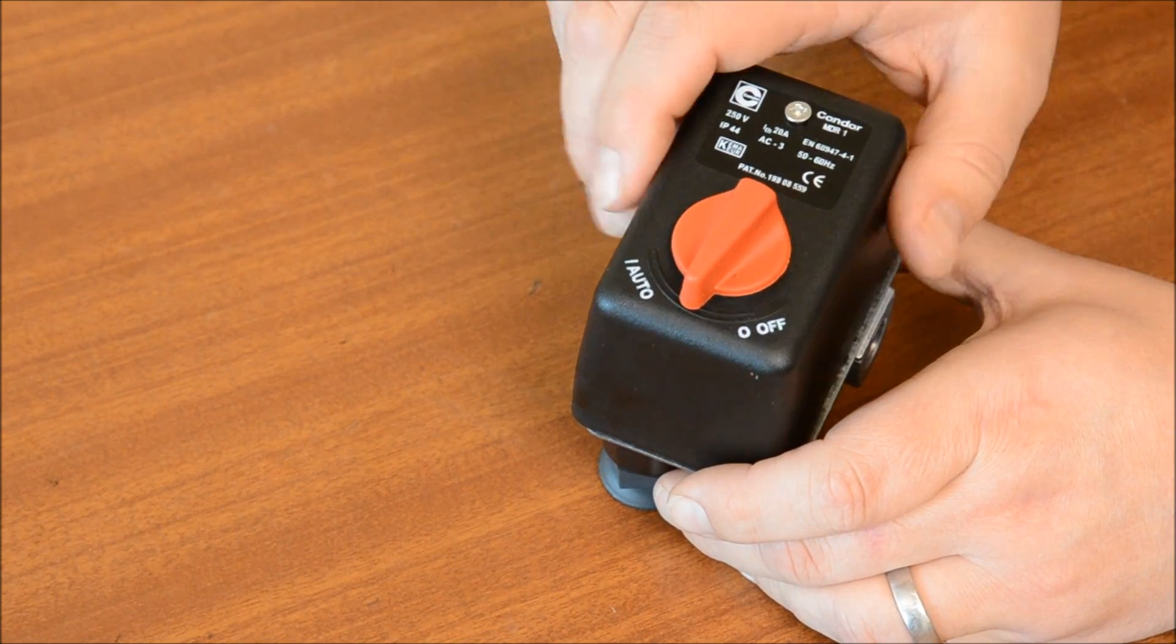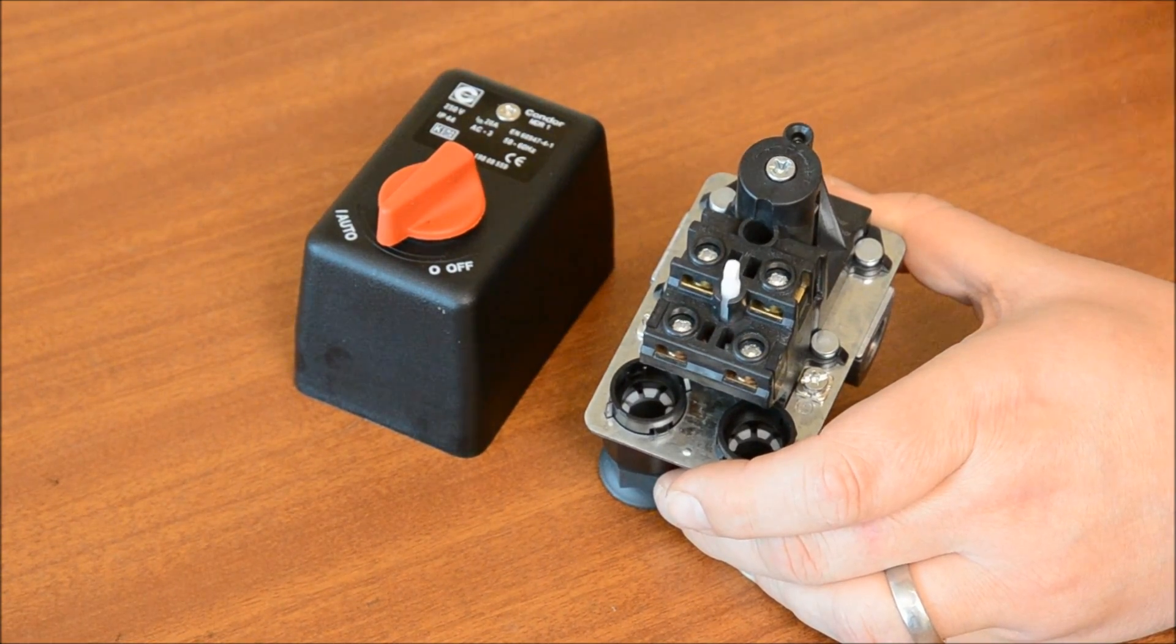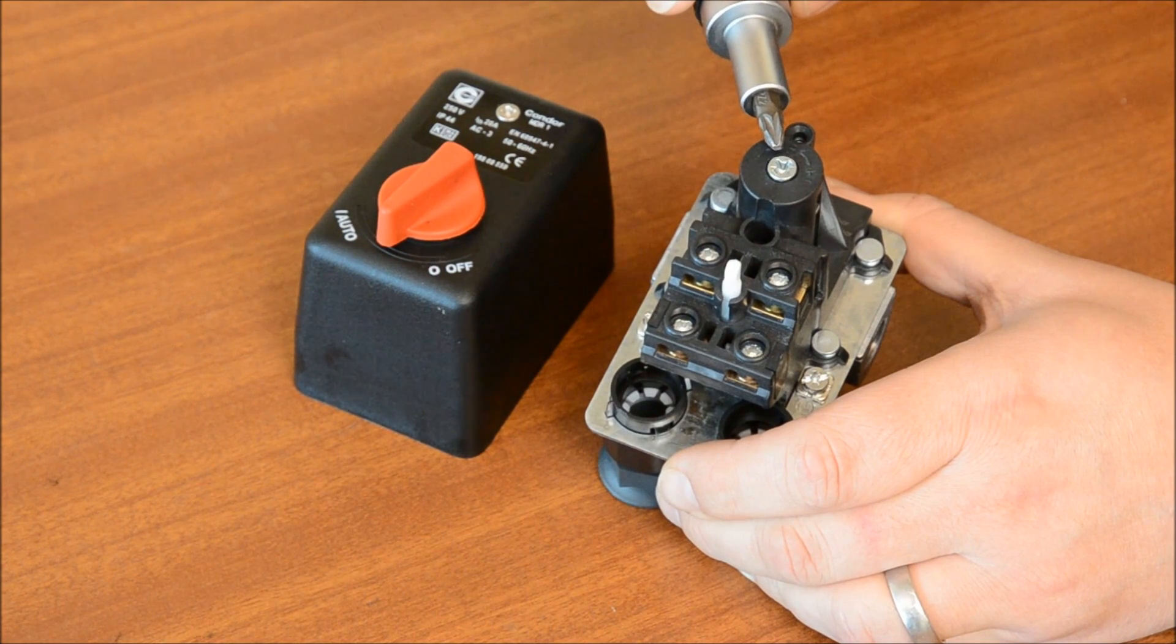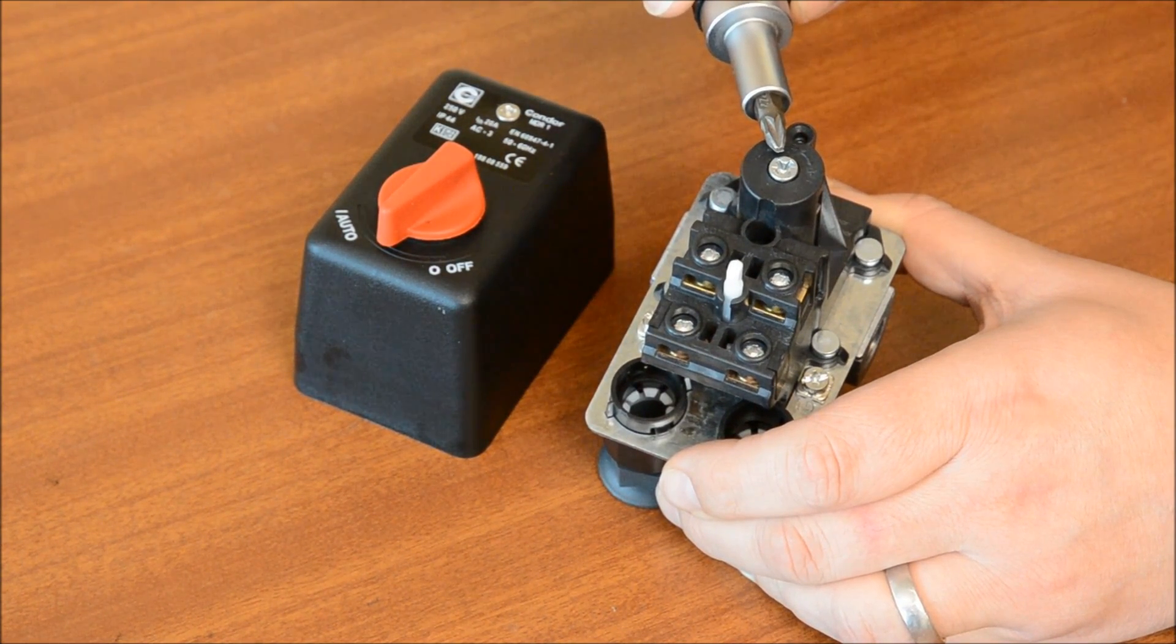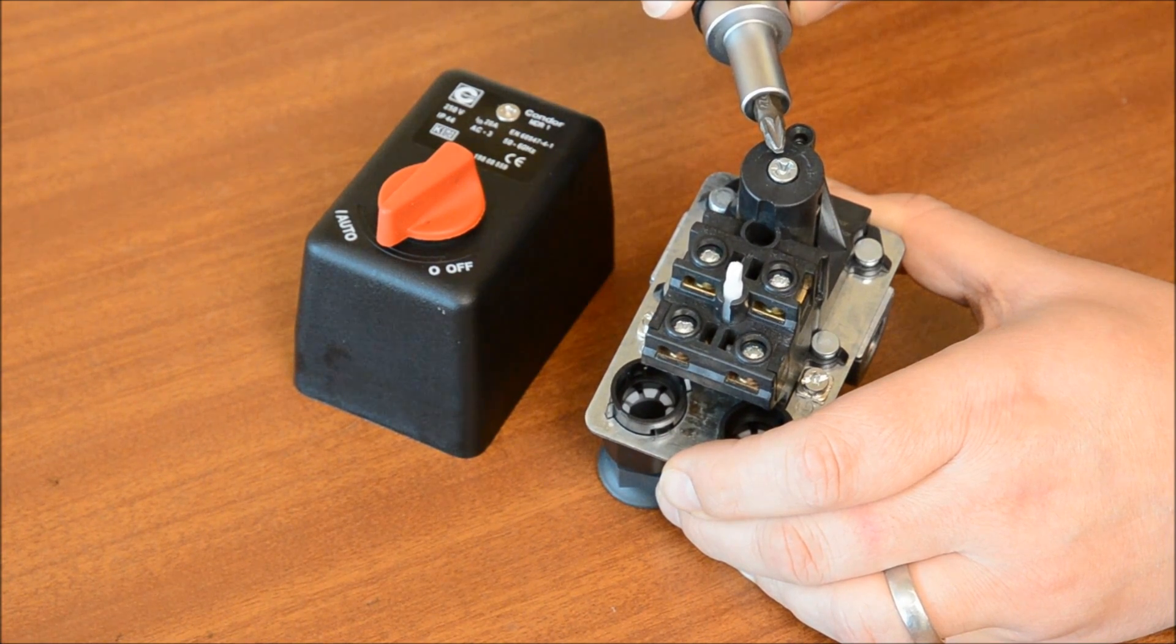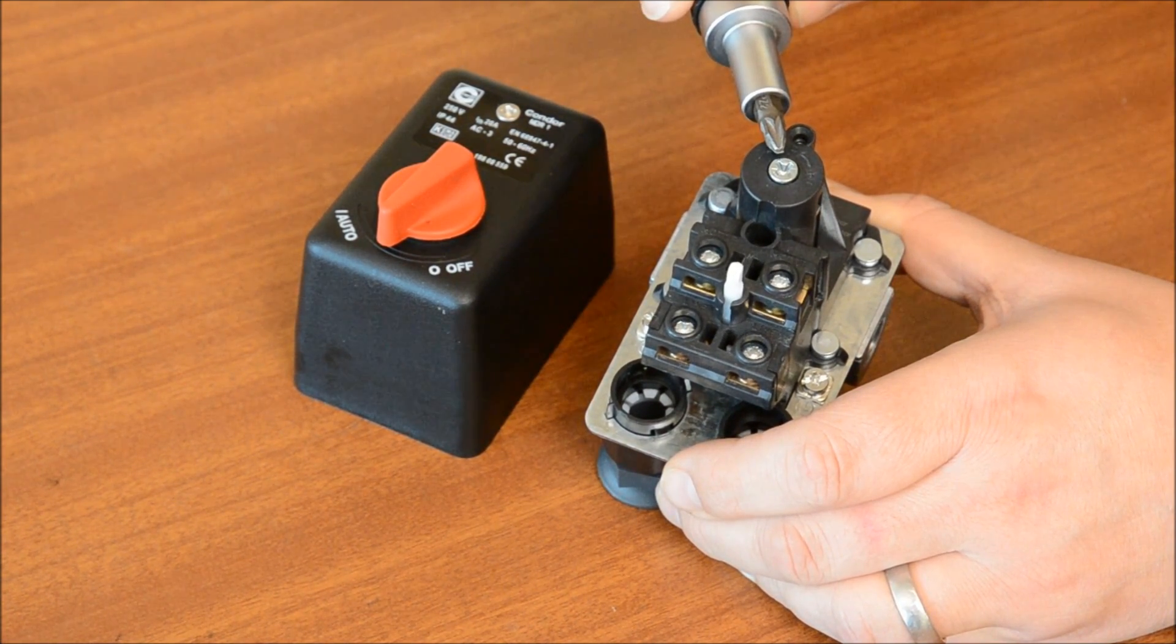The switching pressure can be adjusted by turning the main calibration screw clockwise to increase the cut-in and cut-out pressure, and counterclockwise to decrease the cut-in and cut-out pressure. The difference between the cut-in and cut-out pressure is fixed.